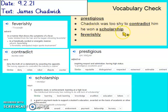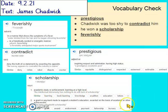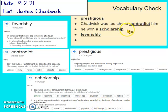He won a scholarship. Now, remember before we looked at scholars — those men in robes that were well educated. A scholarship is academic study or achievement, learning at a high level. And if you can do something really well, sometimes a grant or payment is made to support a student's education based on their academic or other achievements. So because James was really good at his physics, he won a scholarship — someone paid for him to attend his education.